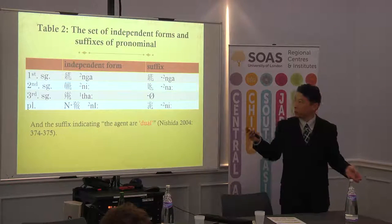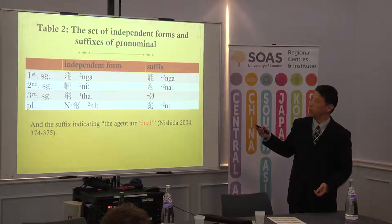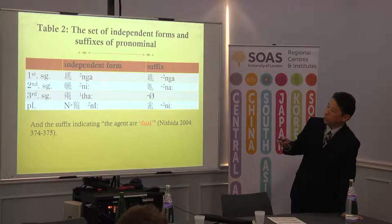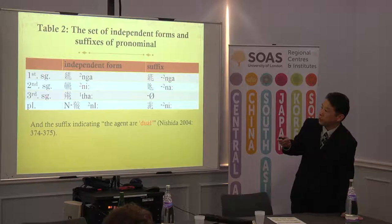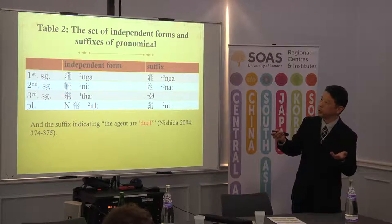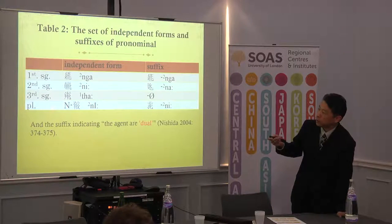And second, this is one of the tables showing the set of independent forms and suffixes of Tangut pronominals. The independent form has a sound and character for each suffix, and it's divided into first, second, and third person. The plural is not an individual form — after the noun, this kind of morpheme means plural, and it probably corresponds to the suffix of the verb.